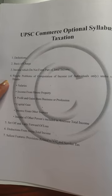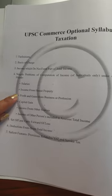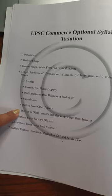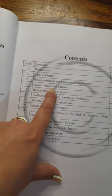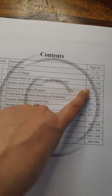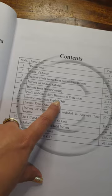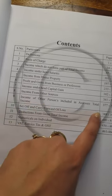In the fourth point, there are problems related to individuals under various heads: salary, house property, PGBP, capital gain, income from other sources, and income of other persons included in the assessee's total income. Looking at the index, we can see salary, house property, PGBP, capital gain, income from other sources, and income of other persons included in total income.